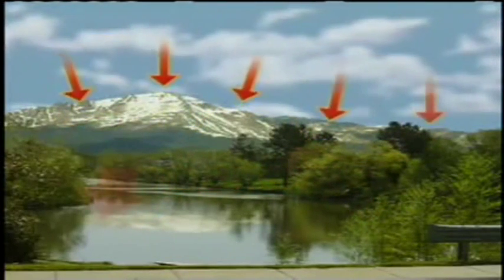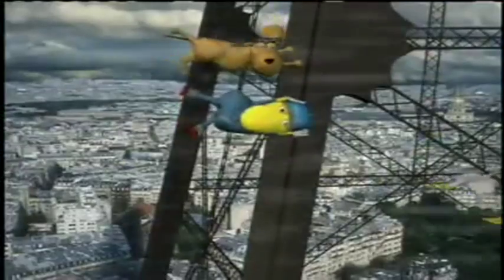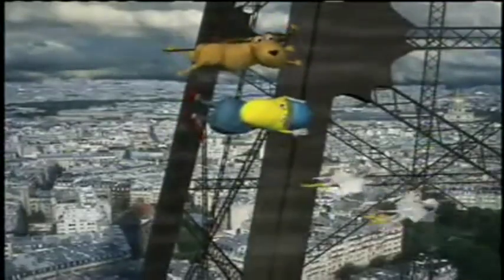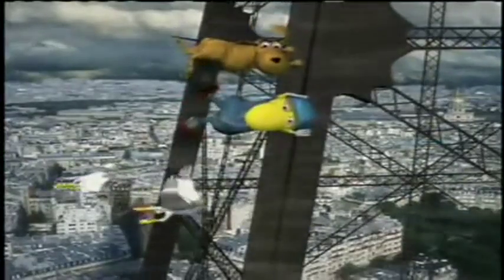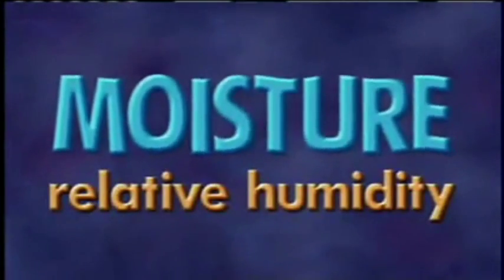Air pressure on the Earth can vary considerably from location to location due to unequal heating of the atmosphere. These air pressure differences cause the movement of air, which we call wind. Finally, the amount of moisture in the air, called relative humidity, also influences weather. Moisture in the atmosphere condenses, causing clouds to develop and precipitation to fall to the Earth.